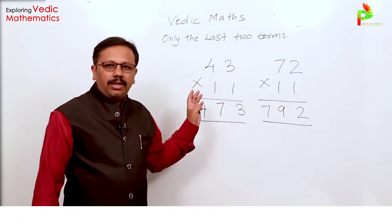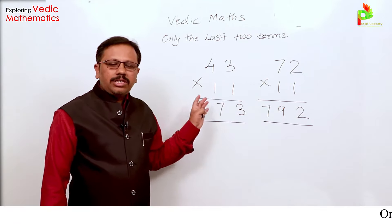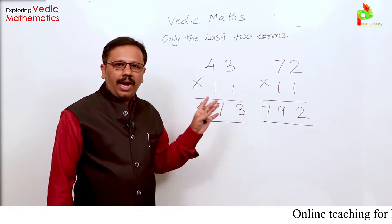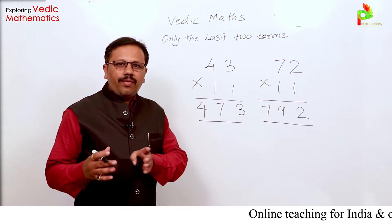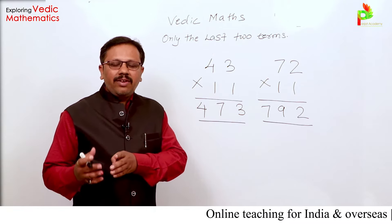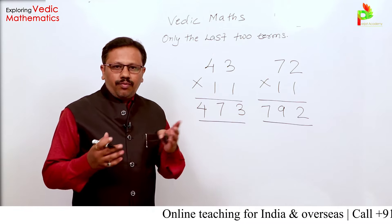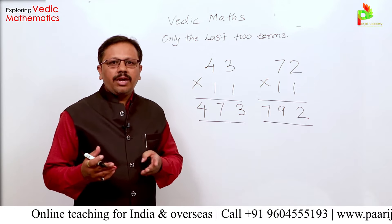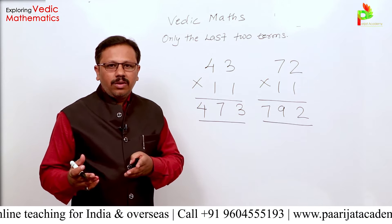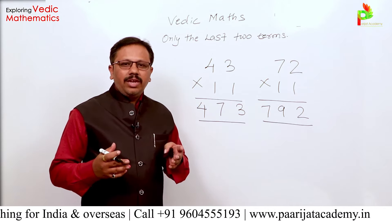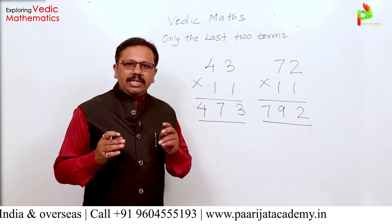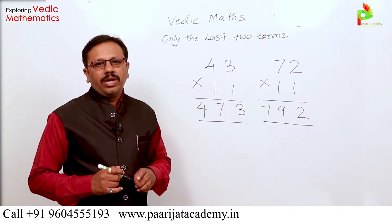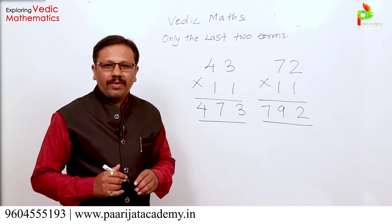You can solve such multiplication even orally. If I ask you 45 times 11 — 4 plus 5 is 9 — so the answer is 495. It is a very easy technique, and you don't need to know the table of 11.